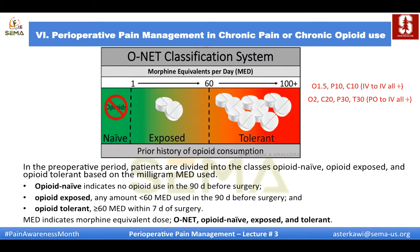The ONET classification categorizes patients as: Opioid Naive — never had an opioid in the last 30 days before surgery; Opioid Exposed — received any amount less than 60 mg morphine equivalent in the last 90 days before surgery; and Opioid Tolerant — received more than 60 mg morphine equivalent dose within 7 days of surgery. A reminder is provided on how to convert common opioids like oxycodone, pethidine, and codeine — whether IV or oral — to morphine equivalents.